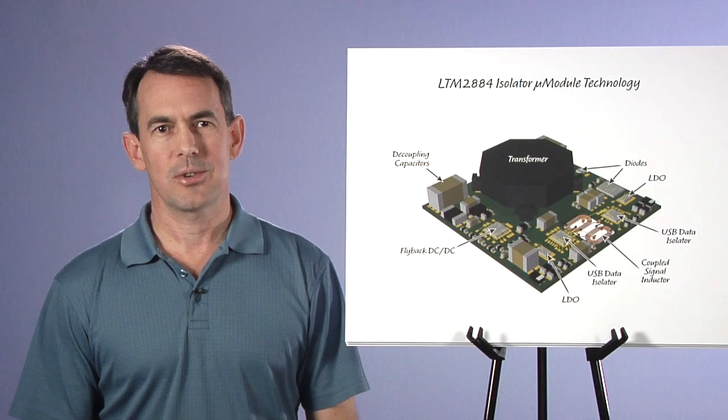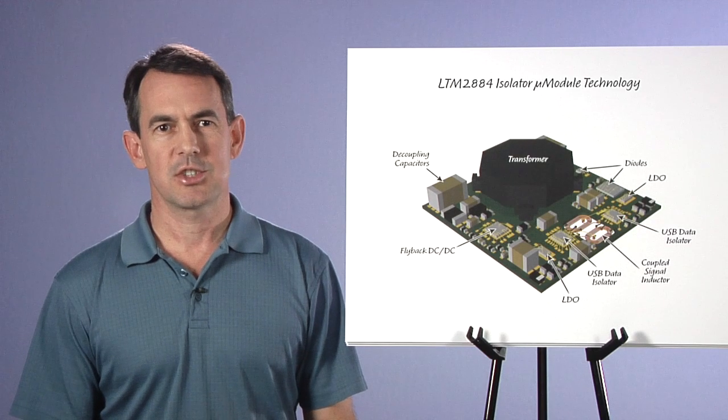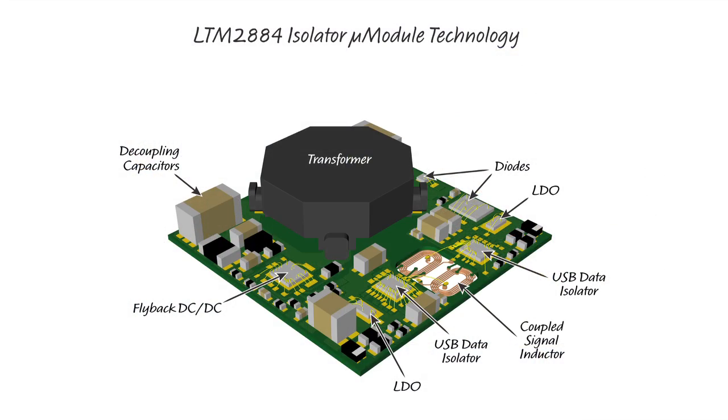Here's an internal CAD drawing of the micro module construction. The coupled signal inductors are labeled and are copper tracks coupled across a 100-micron thick 2-ply internal isolation layer of BT laminate, similar to an FR4 PCB material. The two USB data isolators are on either side of the coils. The DC-to-DC converter uses an integrated flyback converter die, plus a tiny wound toroid core power transformer.